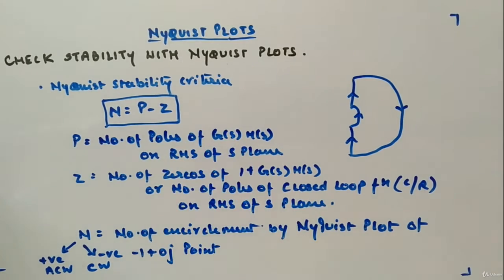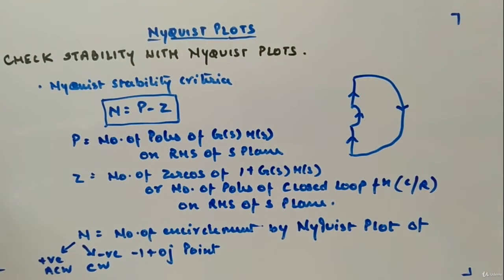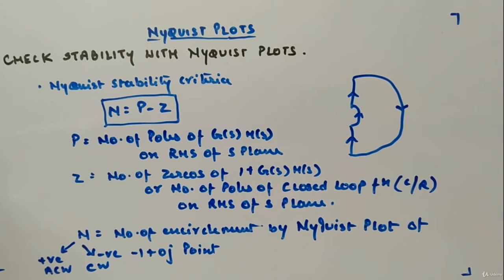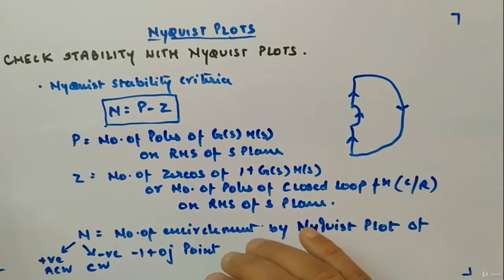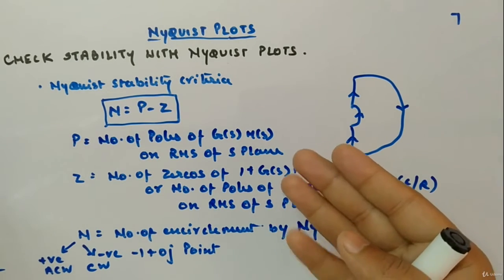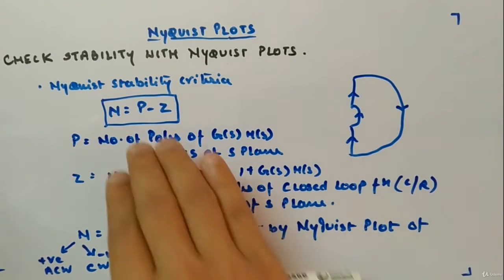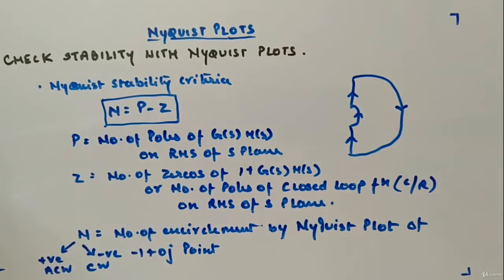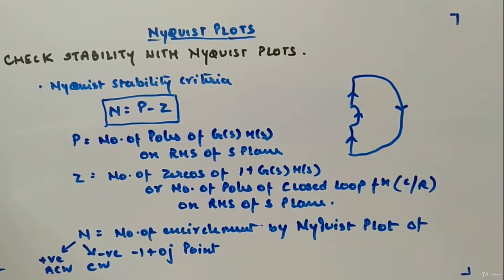This will be given to us. If these two are known to us we can calculate Z. This formula is for this contour. This is the Nyquist stability criteria. From now on I won't be making Nyquist plots, I will directly show you Nyquist plot and test this stability criteria.